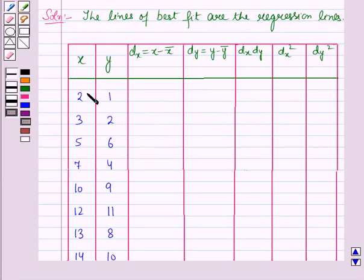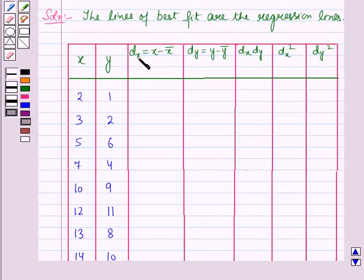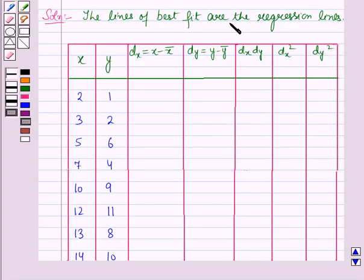In the first column we have different values of x, in the second column different values of y. In the next columns we will find dx, then dy, then dx times dy, then dx squared, and in the last column dy squared.